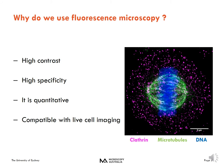Why do we use fluorescence microscopy? Because it offers high contrast, which is of paramount importance, it offers high specificity, it is quantitative — but only if we are using a well-calibrated system and have the control experiments — and also because it's compatible with live cell imaging. The image here is an example of fixed and stained epithelial cells with three different markers: magenta showing clathrin-coated pits, green showing the mitotic spindle, and blue the DNA.